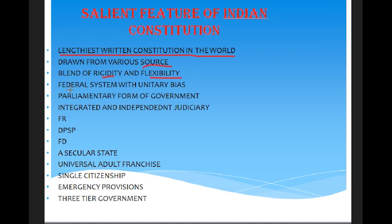The fourth point is the federal system with unitary bias. Federal system means the power has been divided between the union, state, and local bodies. Unitary bias means that more power has been given to the central or union government in some cases. We will understand this in detail when we take a more detailed lecture — this is just a basic overview.